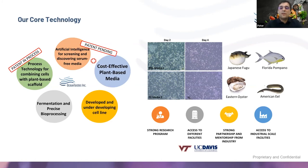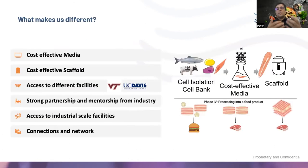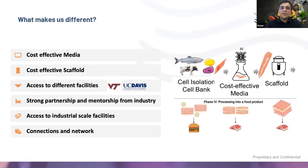We do this using our patent-protected technologies in AI for screening and discovering serum-free media, our cost-effective plant-based media, and our process technologies for combining cells with plant-based scaffolds, along with our expertise in fermentation and bioprocessing. We have developed several cell lines from different species such as Eastern Oyster, American Eel, Florida Pompano, and Japanese Fugo. What makes us unique is our blended cell-based and plant-based approach, along with our AI-driven cost-effective media and plant-based scaffolds. We have unique access to facilities at Virginia Tech and UC Davis.